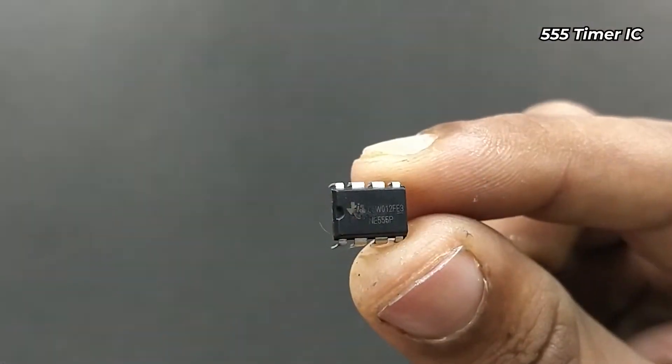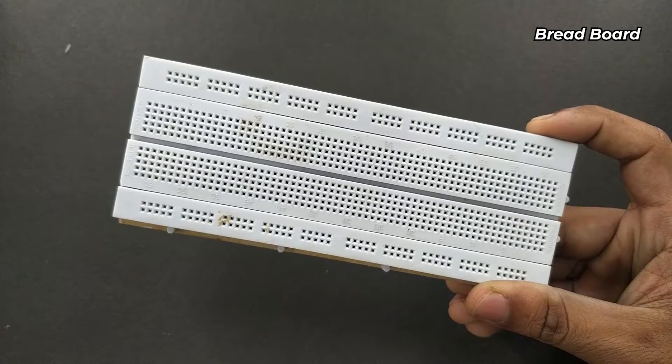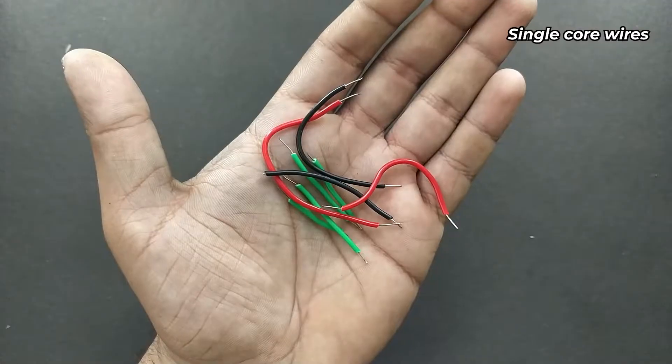And for that, you need a 555 timer IC, two LEDs, a 330 ohm resistor, a breadboard, a 9V battery, and a few wires.